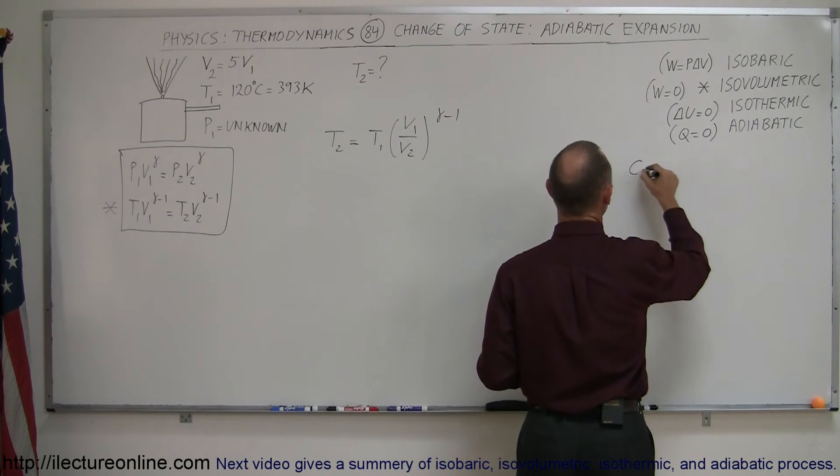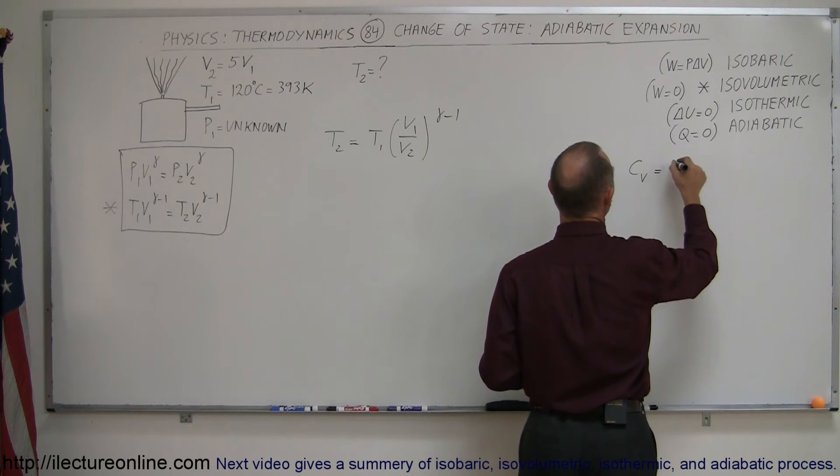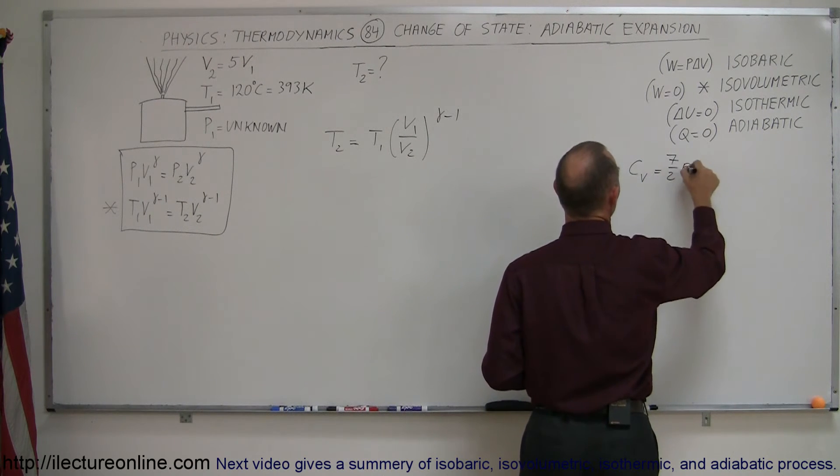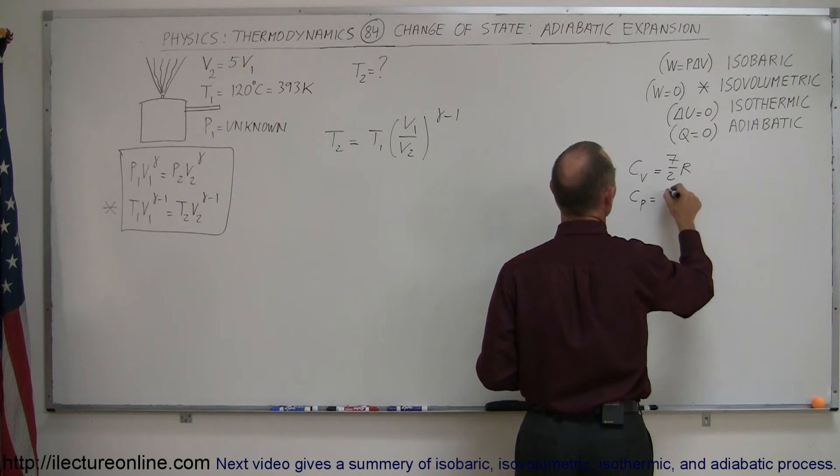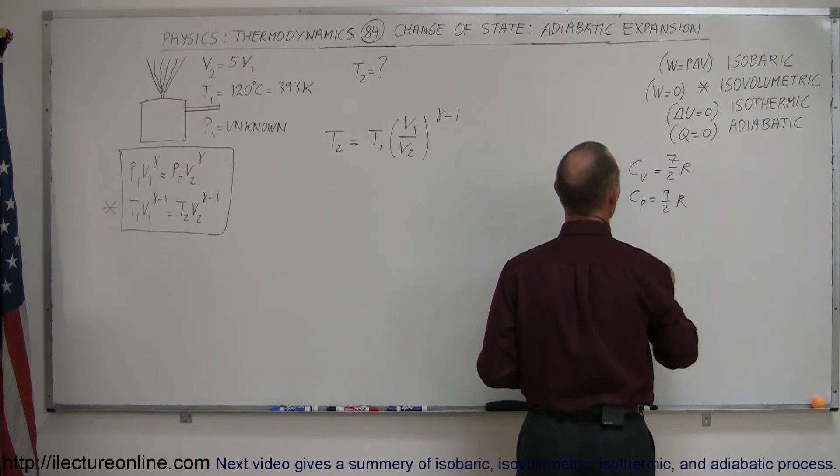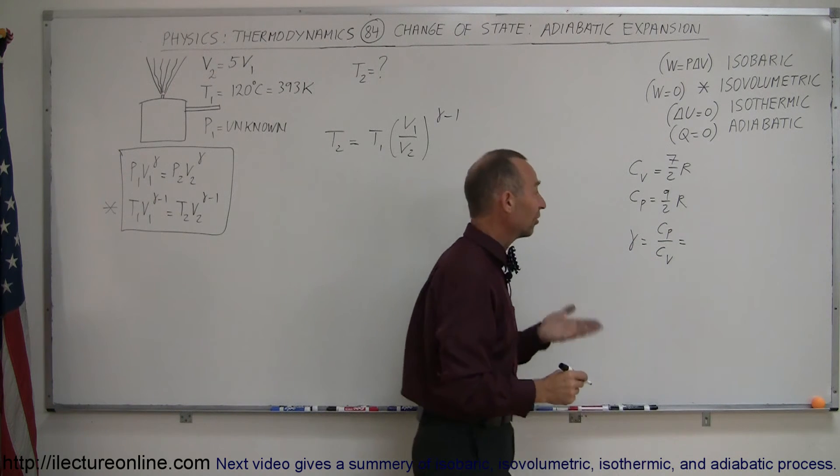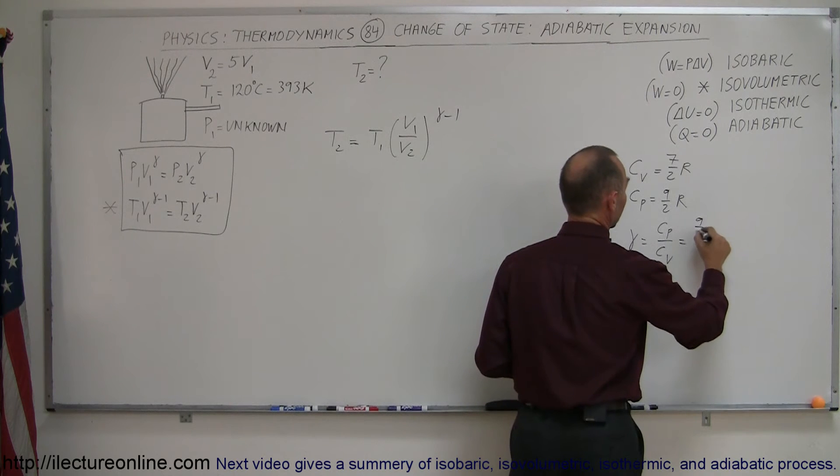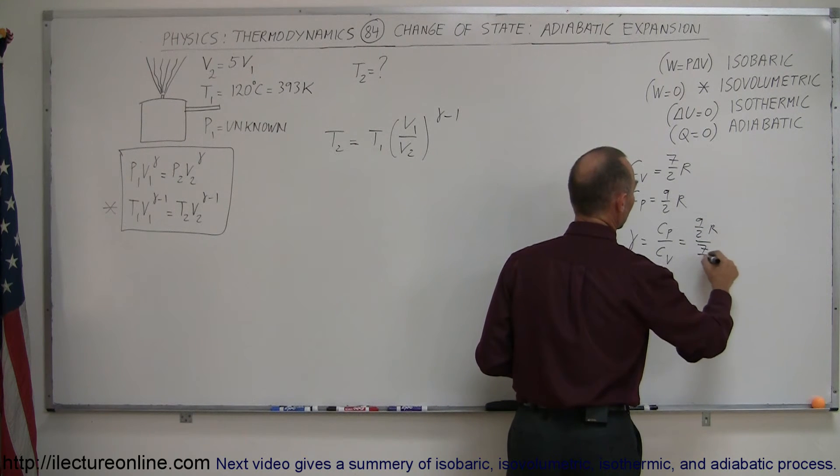so remember that C sub V for a triatomic molecule is 7 over 2R, and C sub P is equal to 9 over 2R, and so gamma would be equal to the ratio of C sub P divided by C sub V,